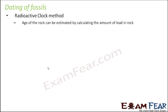Why is it called the radioactive clock? Because a clock is something which tells us time, and this method also tells us the time or age of the fossils. It is called radioactive because it is based upon the radioactive behavior of certain nuclei. In this method, the age of the rock is estimated by calculating the amount of lead present in the rock.